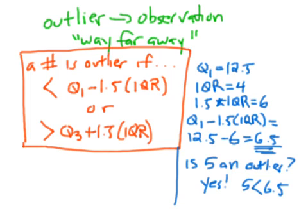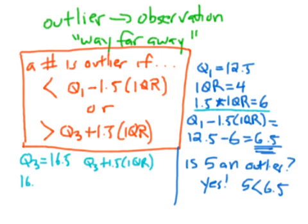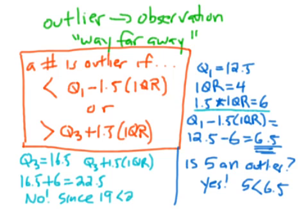Let's see the way it works for big outliers. We said that Q3 was 16.5. We figured out before that 1.5 times the IQR is 6. So what is Q3 plus 1.5 times the IQR? That's going to be 16.5 plus 6 gets us 22.5. So is 19 an outlier? No, since 19 is less than 22.5.